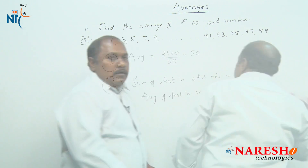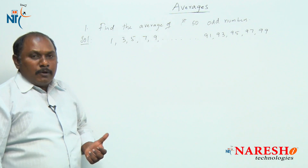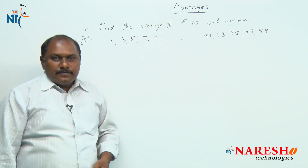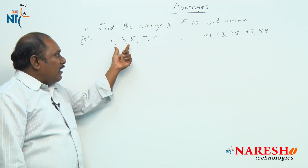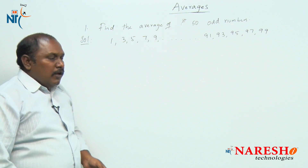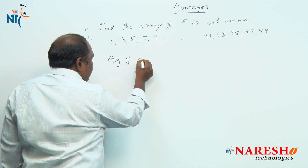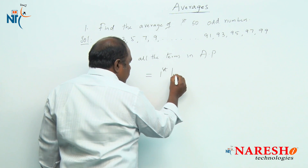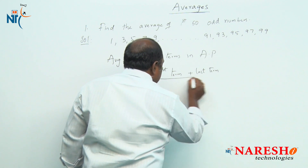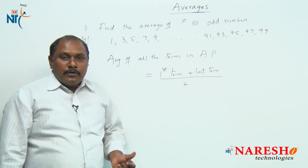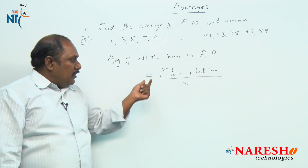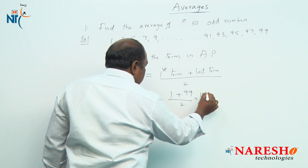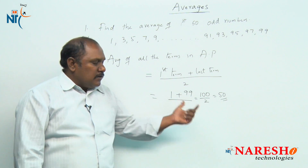Let us look into one more method of solving this particular problem. The odd numbers 1, 3, 5, 7, 9 and so on are in arithmetic progression. When do you say the terms are in arithmetic progression? When they have a common difference. Here the common difference is 2. The average of all terms in arithmetic progression is given by: first term plus last term divided by 2. So according to our question, it should be 1 plus 99 by 2, which is 100 by 2 = 50. We can answer this question in these 3 different ways.